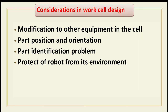The fourth consideration is protection of the robot from its environment. In certain applications, for example spray-painting robots or hot-material-handling robots, means of protection from the adverse effects of the environment must be provided. The fifth consideration is utilities — providing necessary utilities such as electricity, air pressure, or gas for furnaces must be included among the factors considered in work cell layout design.